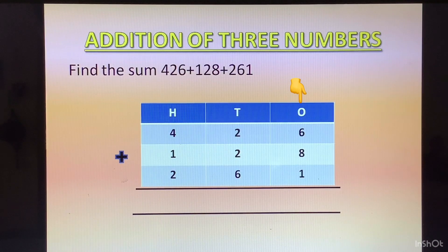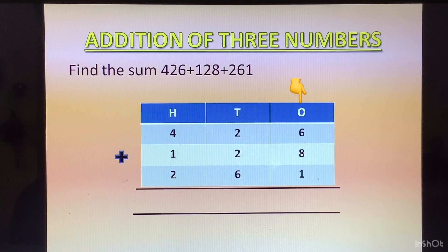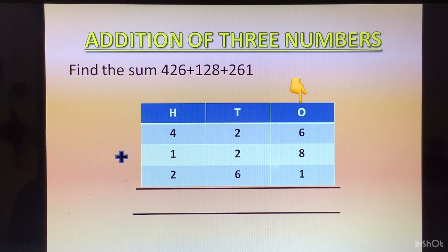1's column we have 6 plus 8 plus 1. You could do 6 plus 8 which is 14 plus 1, 15. You can also change the order of addition. You could do 8 plus 1, 9 and 9 plus 6, 15. Whatever you find convenient, please add in that order. So answer is 15 in whichever way you add. 1 will go at the top of 10's column and 5 will come at the bottom of 1's column.